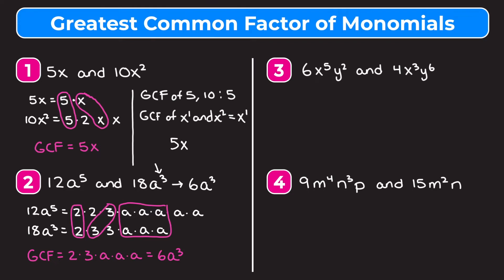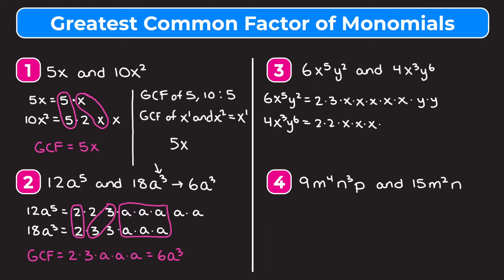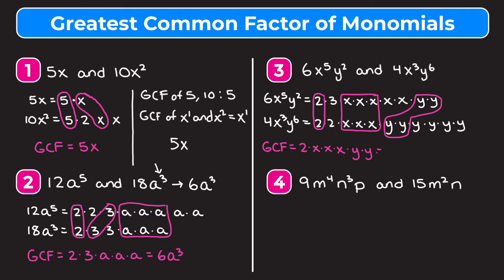Example 3: 6x to the fifth y squared and 4x to the third y to the sixth. Writing out the factors: 6 is 2 times 3, x to the fifth is five x's, y squared is two y's. For 4x cubed y to the sixth: 4 is 2 times 2, x to the third is three x's, y to the sixth is six y's. Circling what they have in common: one 2, three x's, and two y's.